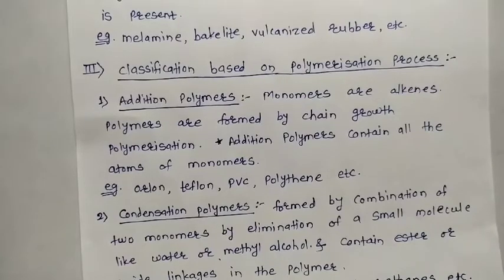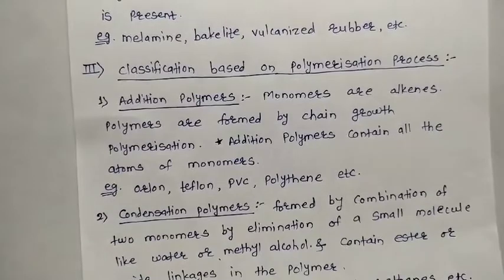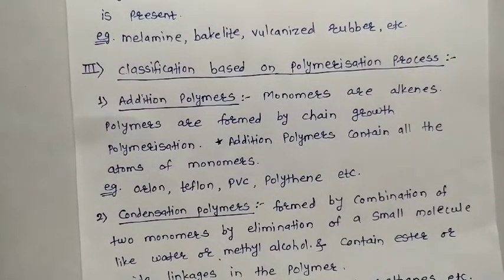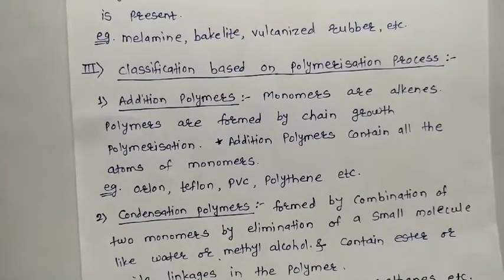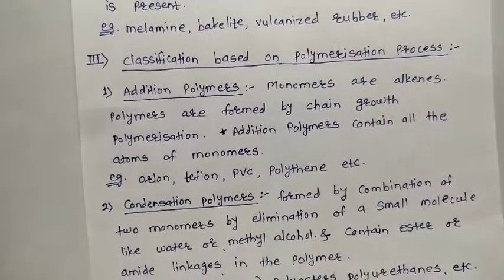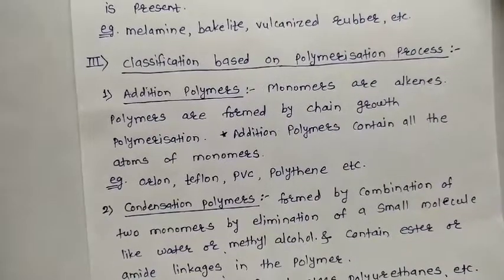Addition polymers are those in which monomers are alkenes. They are formed by chain growth polymerization. A very important point is that addition polymers contain all the atoms of the monomers. Examples of addition polymers include Orlon, Teflon, PVC, and polythene.